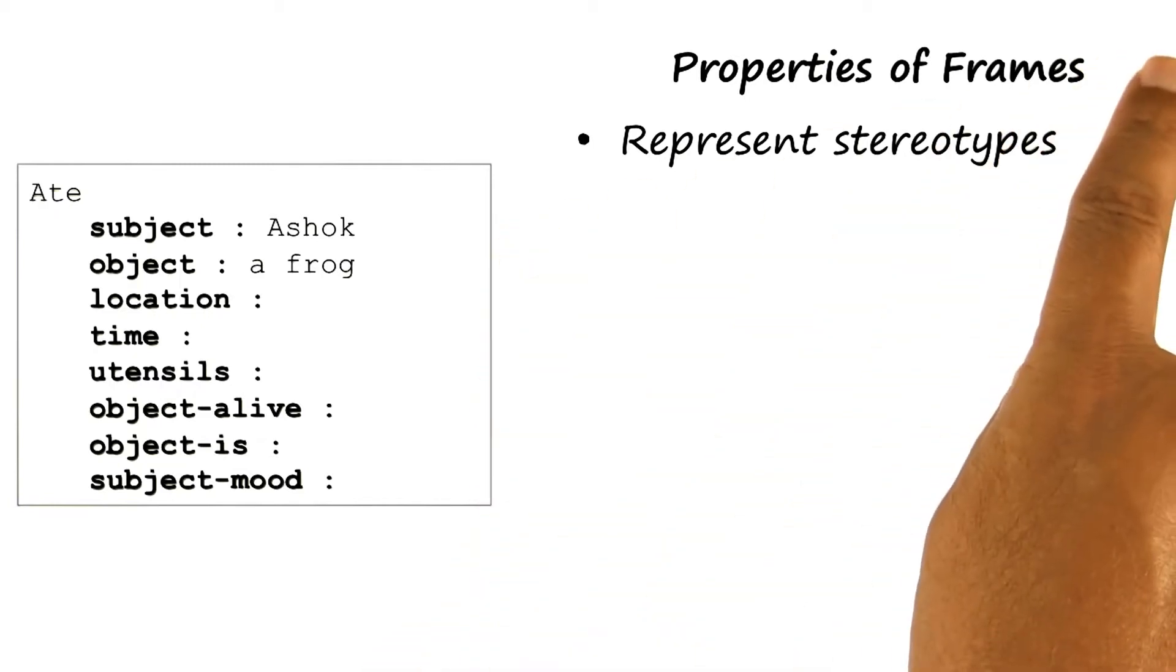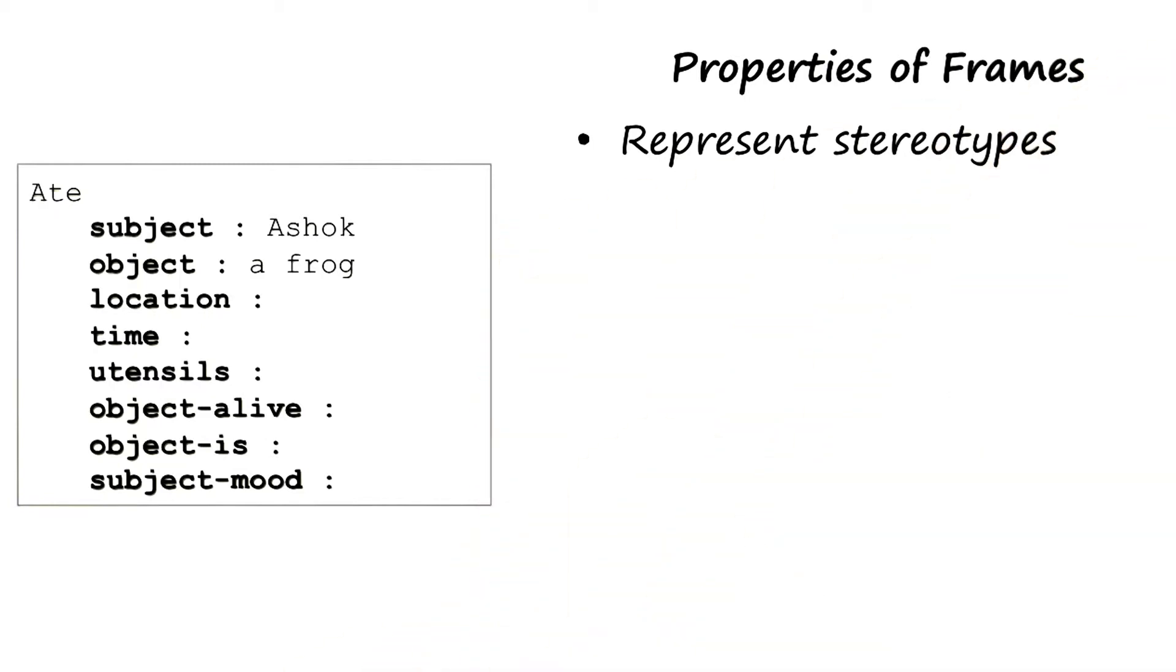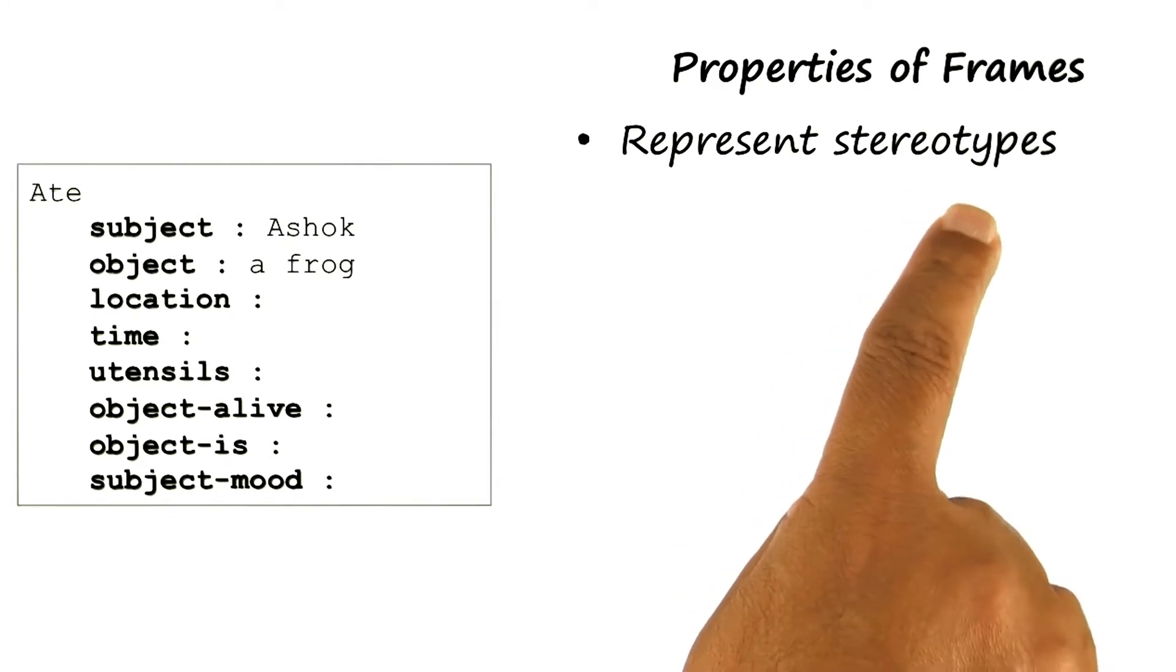There are three cardinal properties of frames. The first property is that frames represent stereotypes.